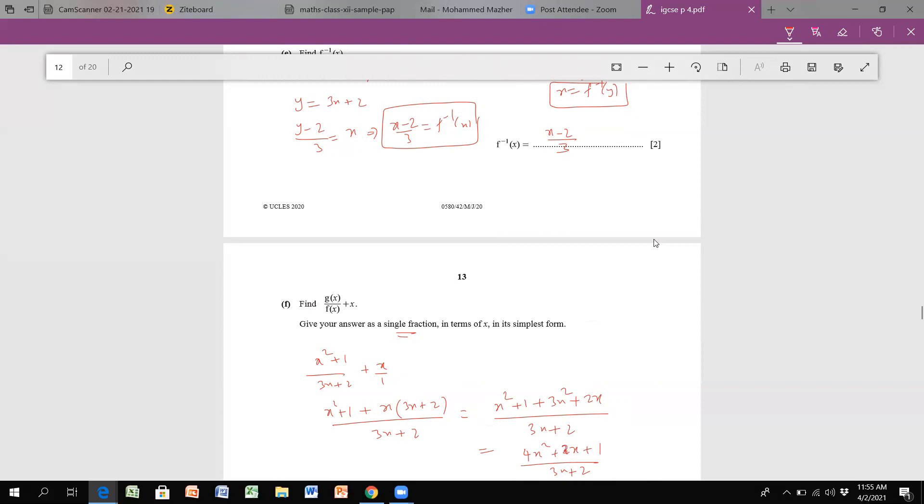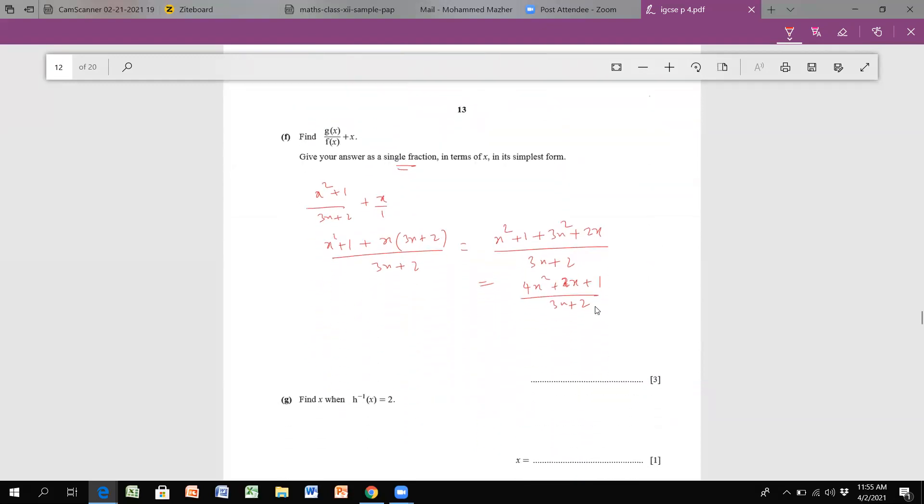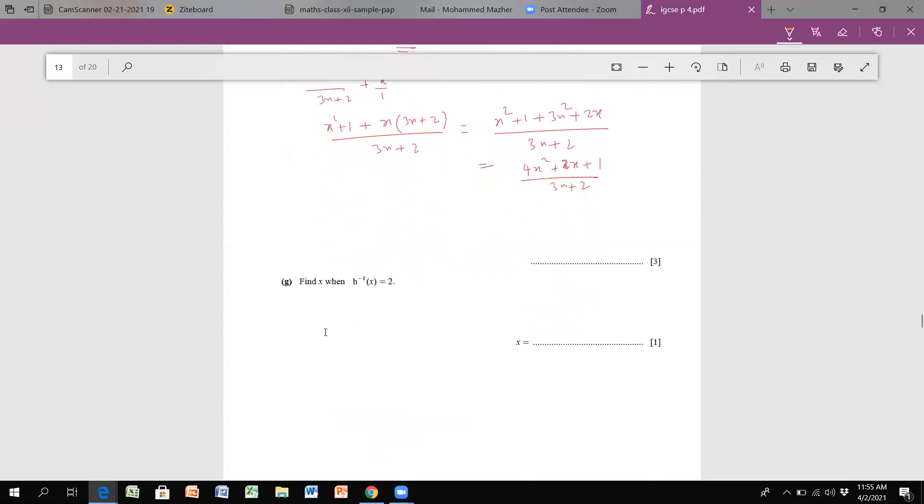And finally, find x when h inverse x equals 2. Remember our h(x) function is 4 raised to x. Now I need to find the inverse of this one, whose value is already given. As we go with exponent type of things, which is the reverse process of logarithm, I'm gonna get log y to the base 4, which will give me x. Now I've converted and found the inverse, so h inverse x equals log of x base 4.